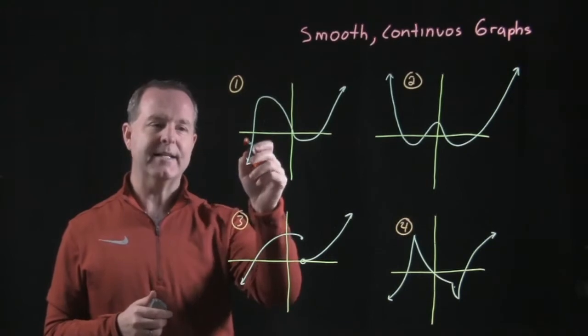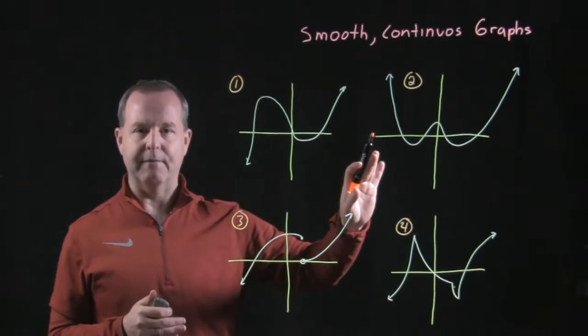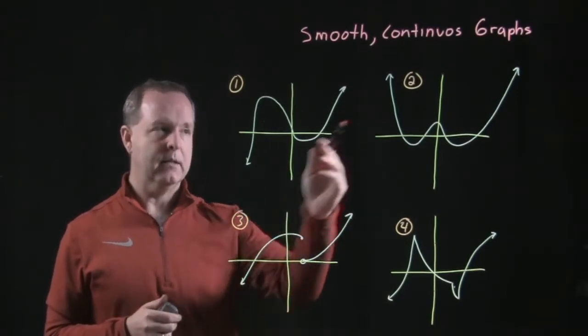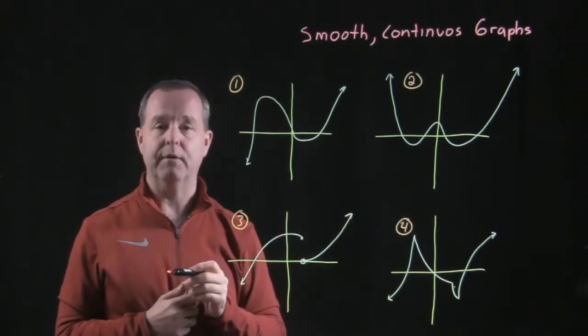So example one has a nice smooth flow all the way through the graph from left to right. Likewise, so does number two. That has a nice smooth continuous flow.